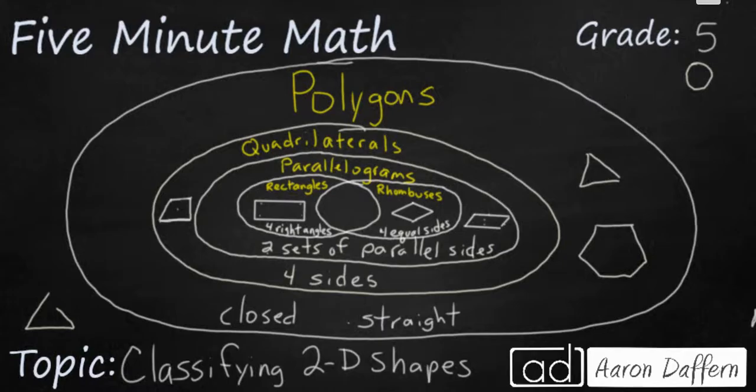A rhombus on the other hand has four equal sides. Some of you might think of this as a diamond but really a rhombus is a parallelogram that has four sides that are the exact same length.